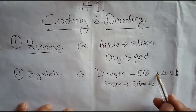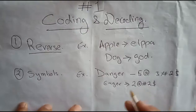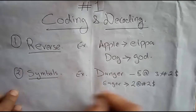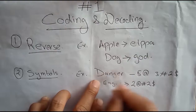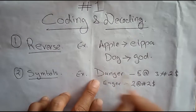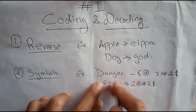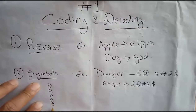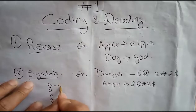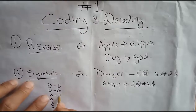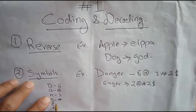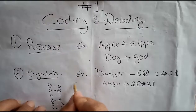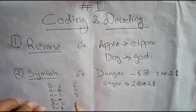If DANGER was coded as $5@3#2, we will code EAGER using the same mapping. For the exam, you must look at each symbol and check which alphabet it represents. Write out D, A, N, G, E, R with their symbol equivalents, then write E, A, G, E, R — giving us 2, @, #, 2, $.